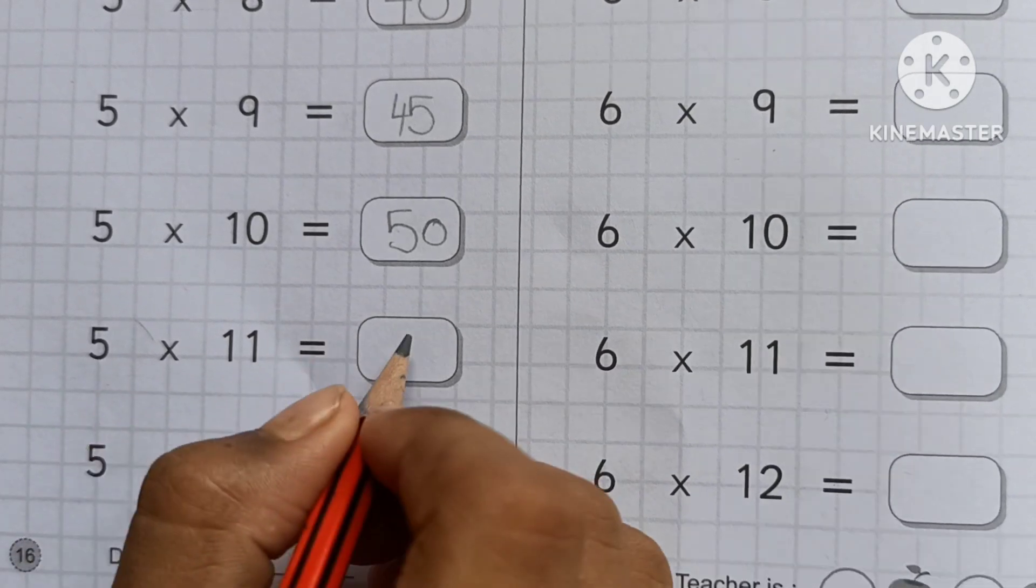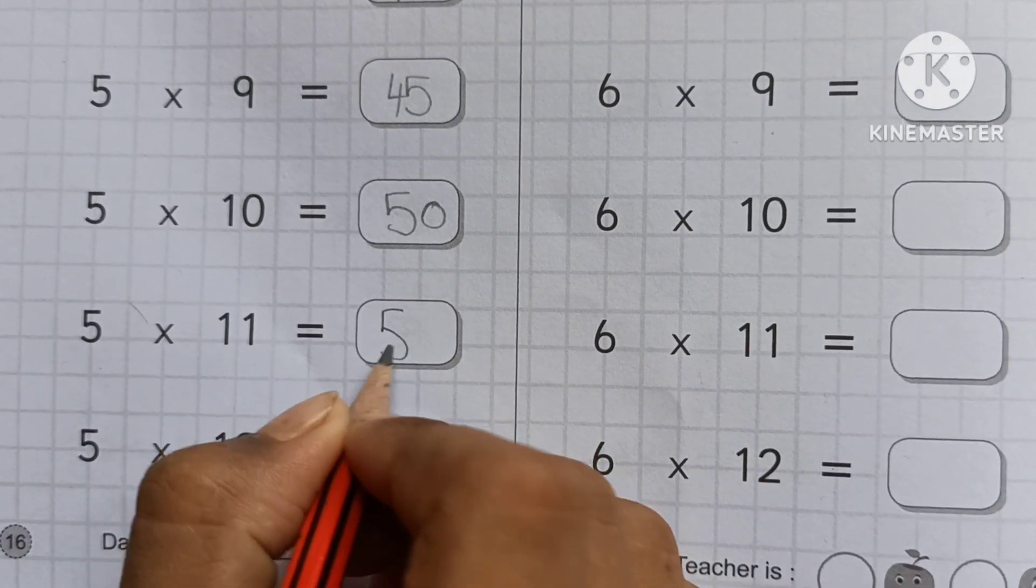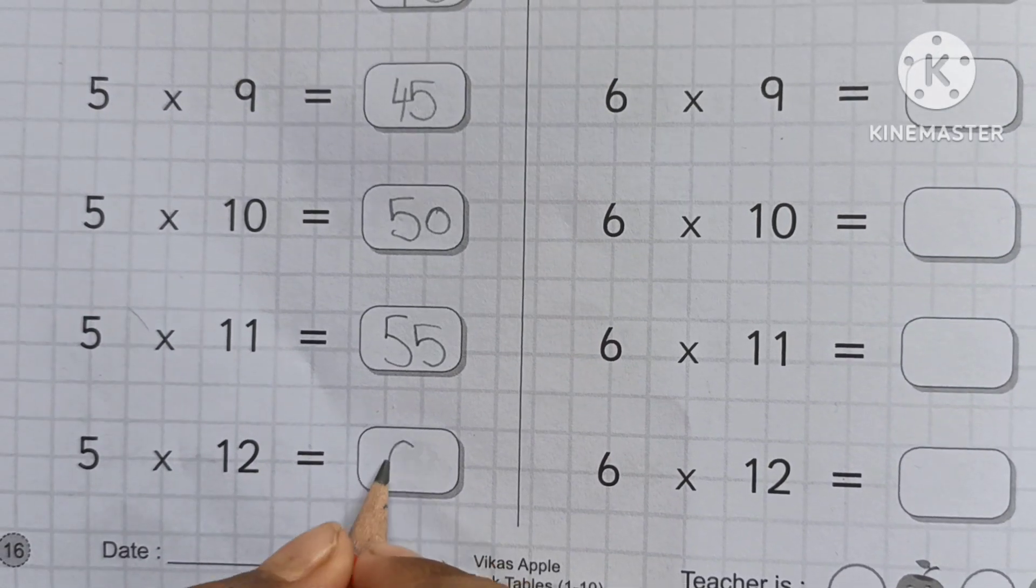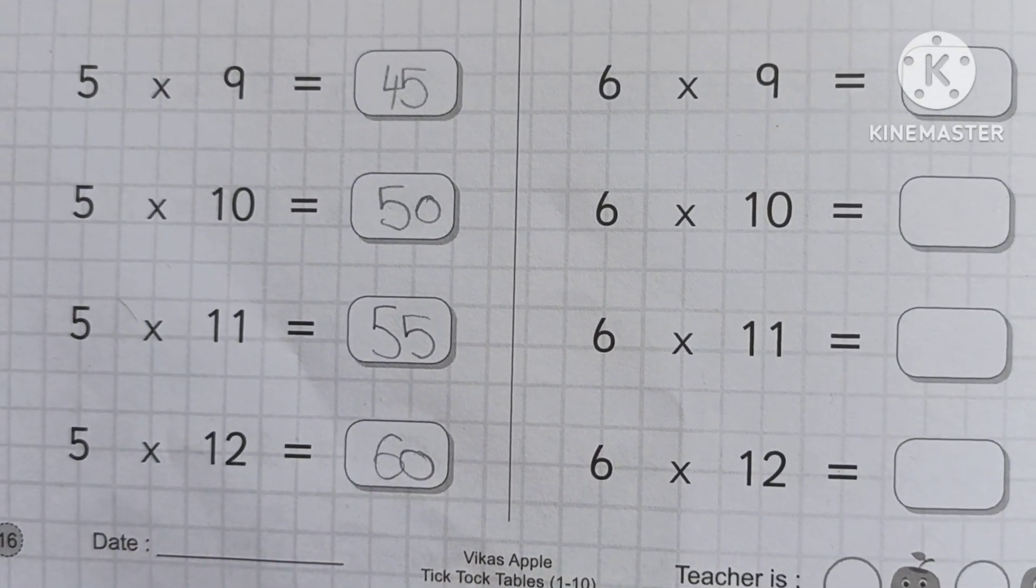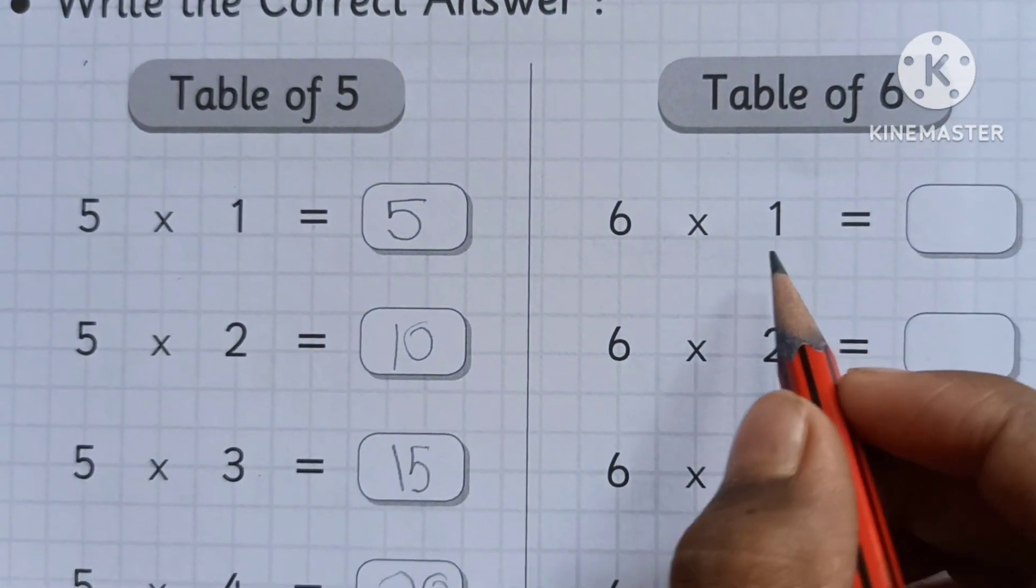Five tens are fifty. Five elevens are fifty-five. Five twelves are sixty. Very good. Now the table of six, all right? Start.